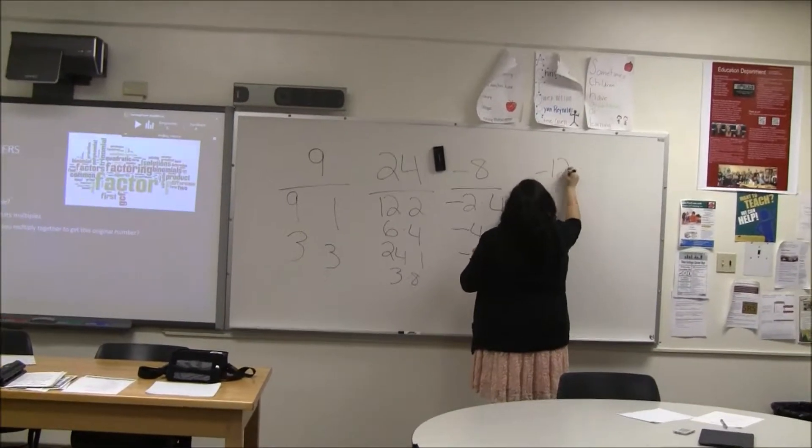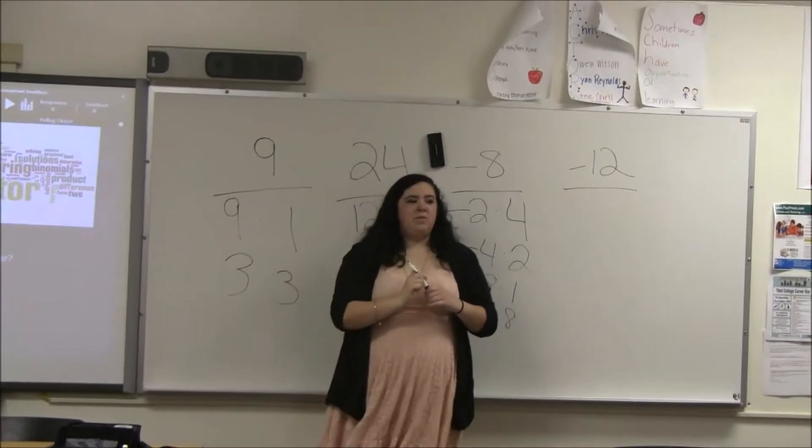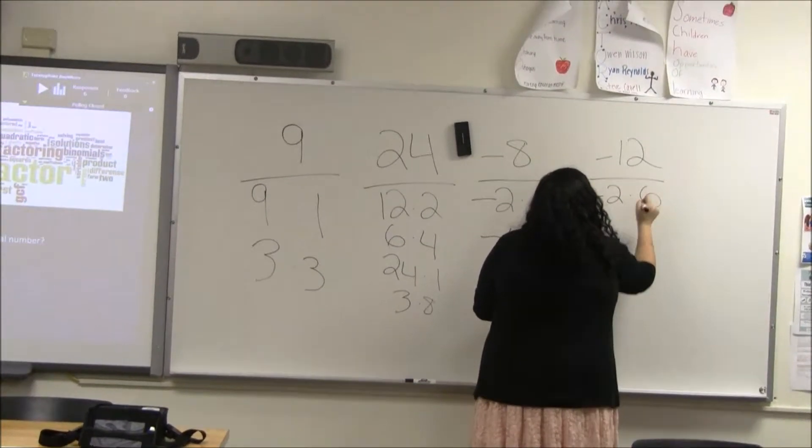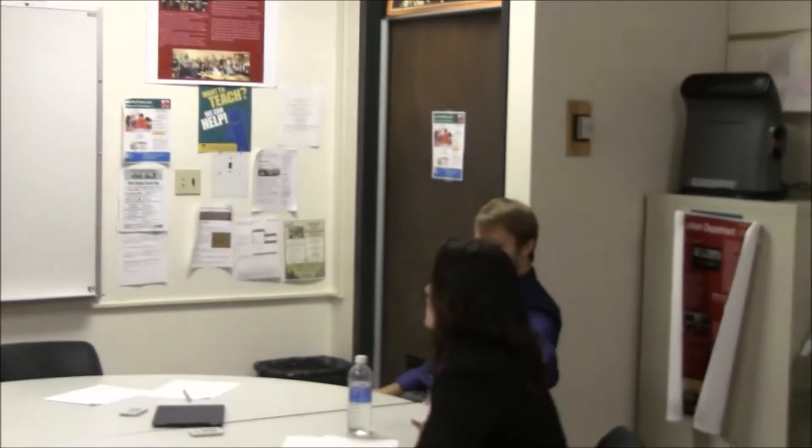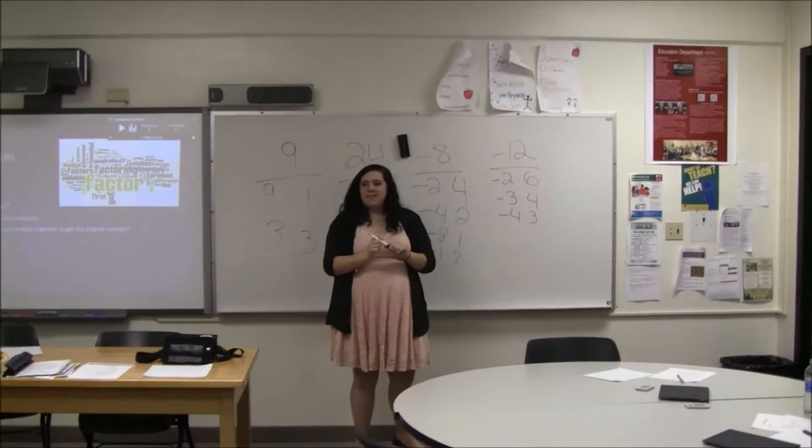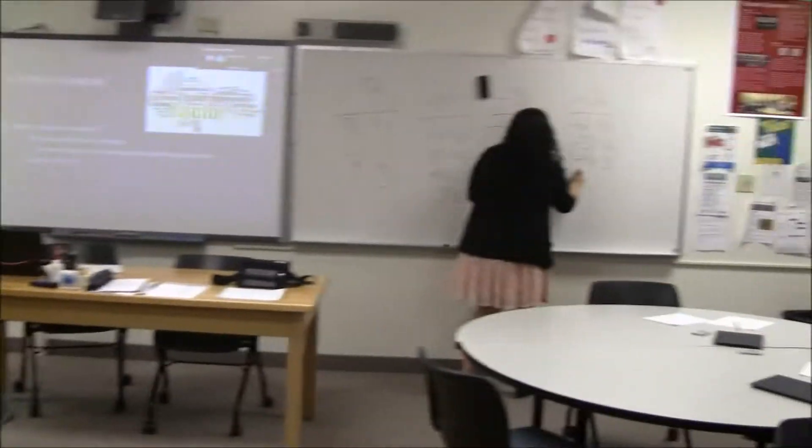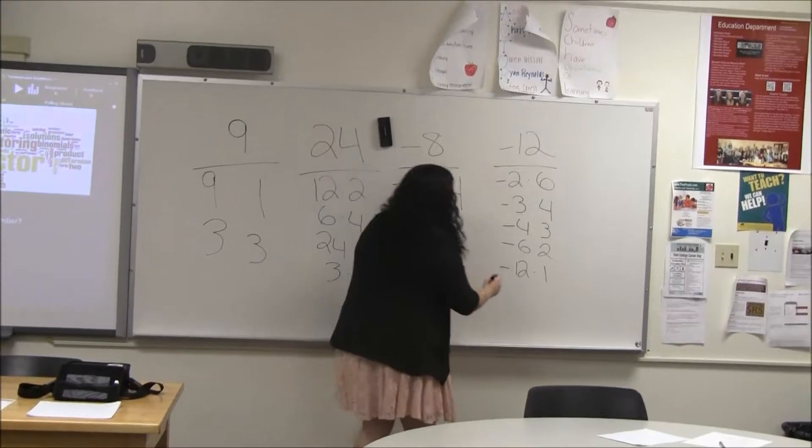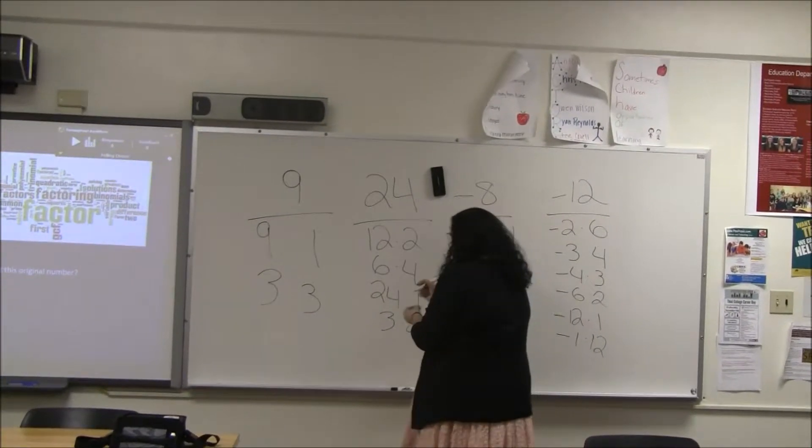We're going to do one more. Negative 12. Negative 2 and positive 6. Alright. Negative 3 and positive 4. Correct. Robert? Negative 4 and positive 3. Correct. Yes. Negative 6 and positive 2. Robert? Negative 12 and positive 1. There's one more. Jamie? Negative 1 and positive 12. Good job, guys. Good job, Jamie.